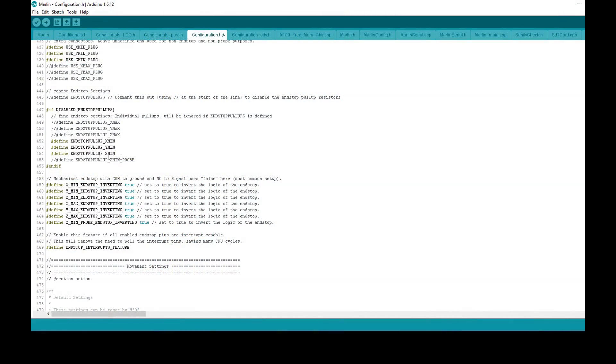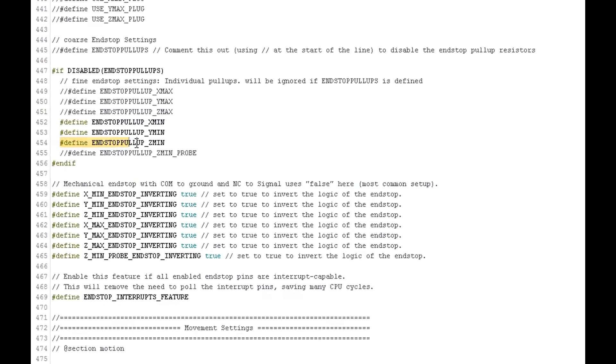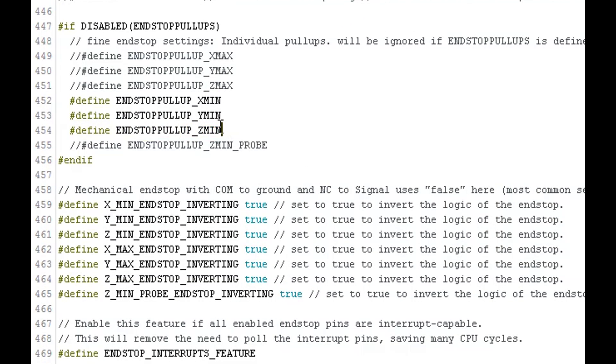For the NPN probe, we do need to define the pull-up resistor for the Z-min input and we also need to set the inverting logic to true for Z-min as a high signal is no metal and a low signal or a ground is conducting metal. However, if you're using the normally closed version of the probe, then you would set this to false.